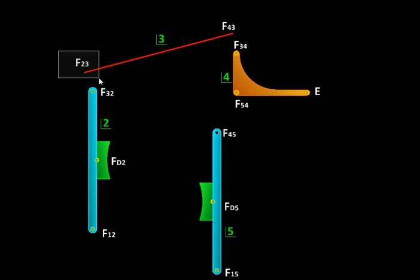So these forces are basically coming from one link onto the other. For example, this force comes from link 2 on link 3, while this force comes from link 3 on link 2.